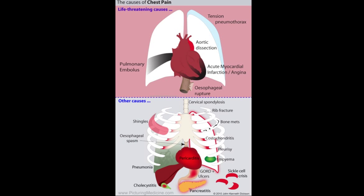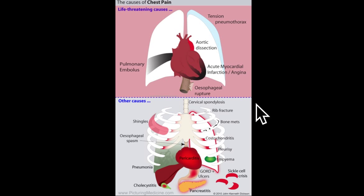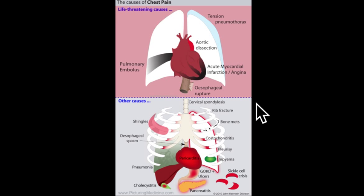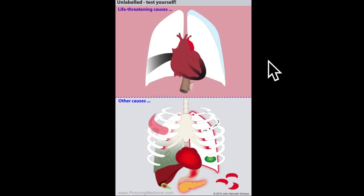This Picturing Medicine diagram summarizes the different causes of chest pain. There are two categories: those at the top, which are potentially acutely life-threatening, and those at the bottom, which although important and sometimes serious are generally not acutely life-threatening. With all Picturing Medicine drawings, we remove the labels and talk through the different causes with this visual aid memoir.